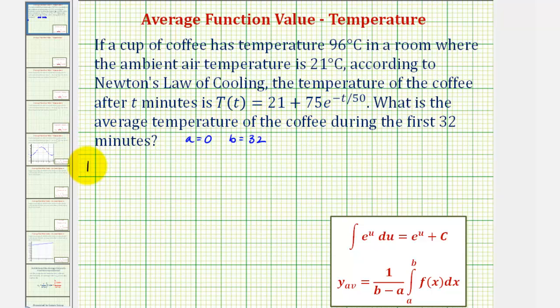So the average temperature, capital T sub AV, is equal to one divided by B minus A, that'd be 32, times the integral of T(t), which is 21 plus 75 times e raised to the power of negative t divided by 50, from zero to 32.